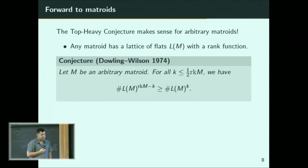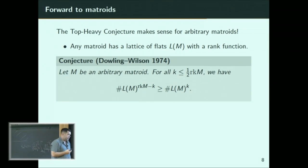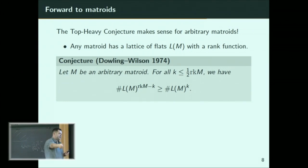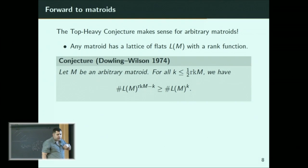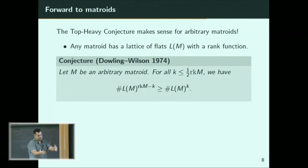What can we do? Realizable means there exists a vector space over some field. That's more general than what was proven before, but there are some reductions you can make if a matroid is realizable over some field versus another.